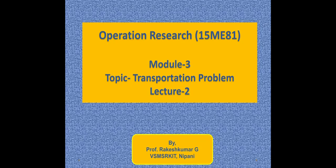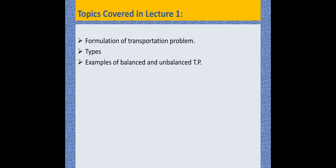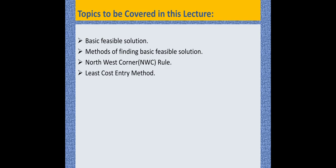Hi students, welcome to video lecture 2 of module 3, Topic: Transportation Problem. In lecture 1, the topics covered were formulation of transportation problem, types of transportation problem, and examples of balanced and unbalanced transportation problems, including how an unbalanced transportation problem can be converted into a balanced one. In today's lecture, we will discuss Basic Feasible Solution, methods of finding Basic Feasible Solution, Northwest Corner Rule, and Least Cost Entry Method.